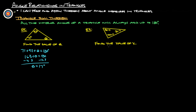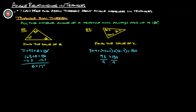Same thing with this example — find the value of X. We have three angles and we know they must add up to 180: 3X minus 4, plus 4X plus 11, plus 2X minus 7, all equals 180. Simplifying: 3X plus 4X plus 2X is 9X; negative 4 plus 11 minus 7 is 0; so 9X equals 180. Divide both sides by 9 and we get X equals 20. We're using the triangle sum theorem to figure out the variable and the missing angle.